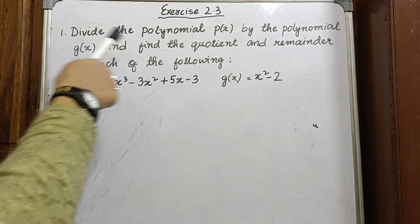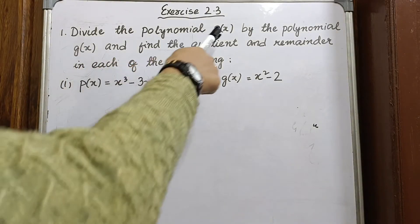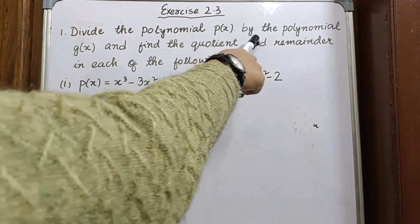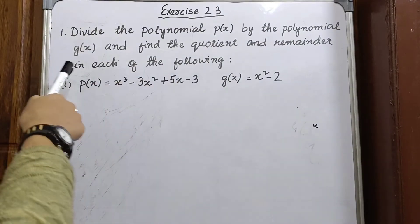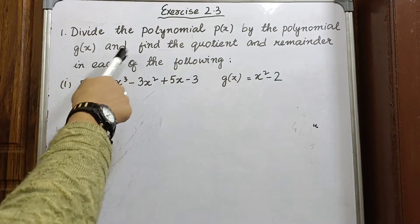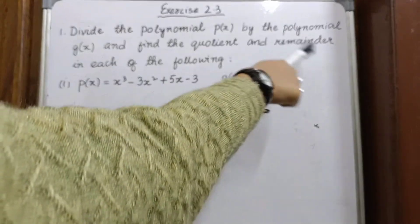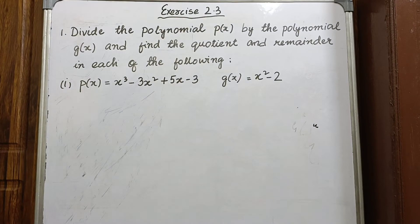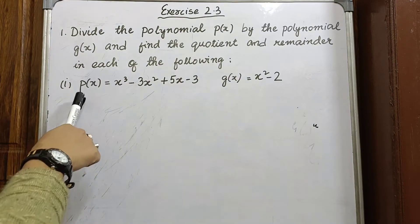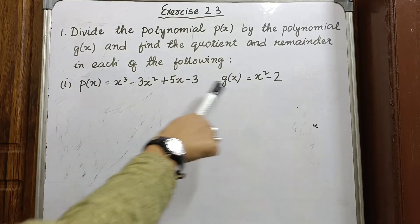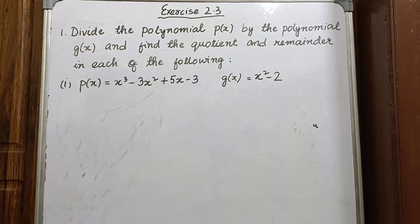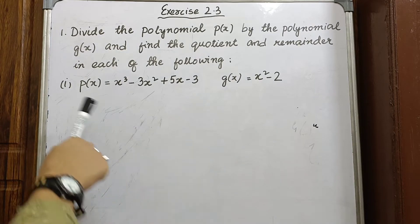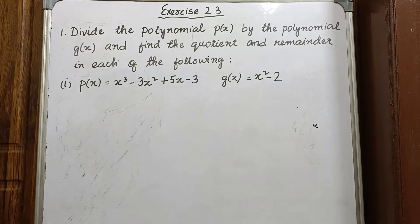Question number 1: divide the polynomial p(x) by the polynomial g(x) and find the quotient and remainder of each of the following. Here we are given two polynomials, p(x) and g(x). We will divide p(x) by g(x).